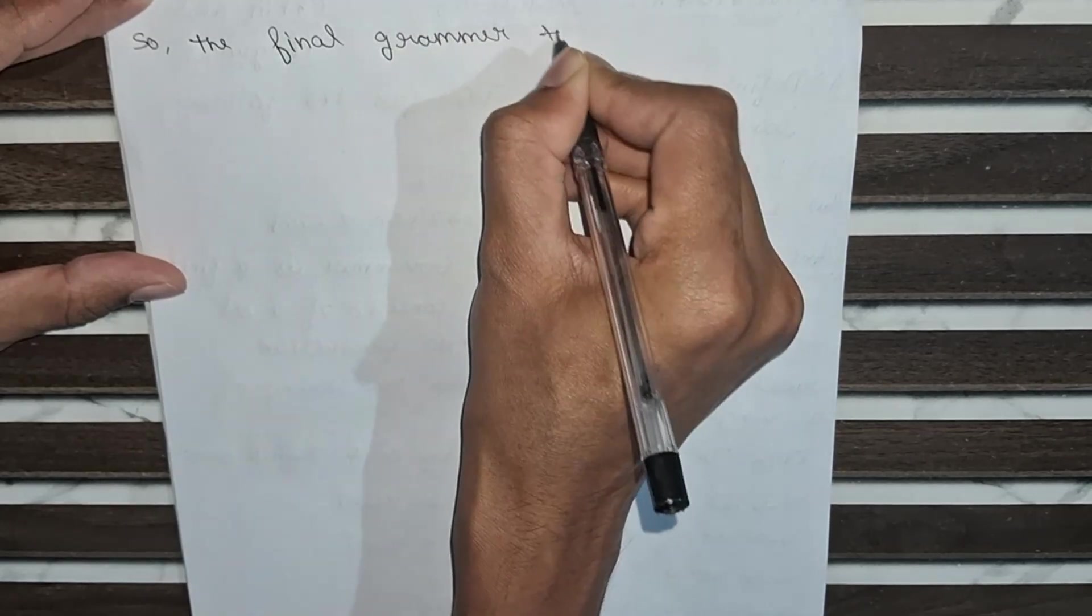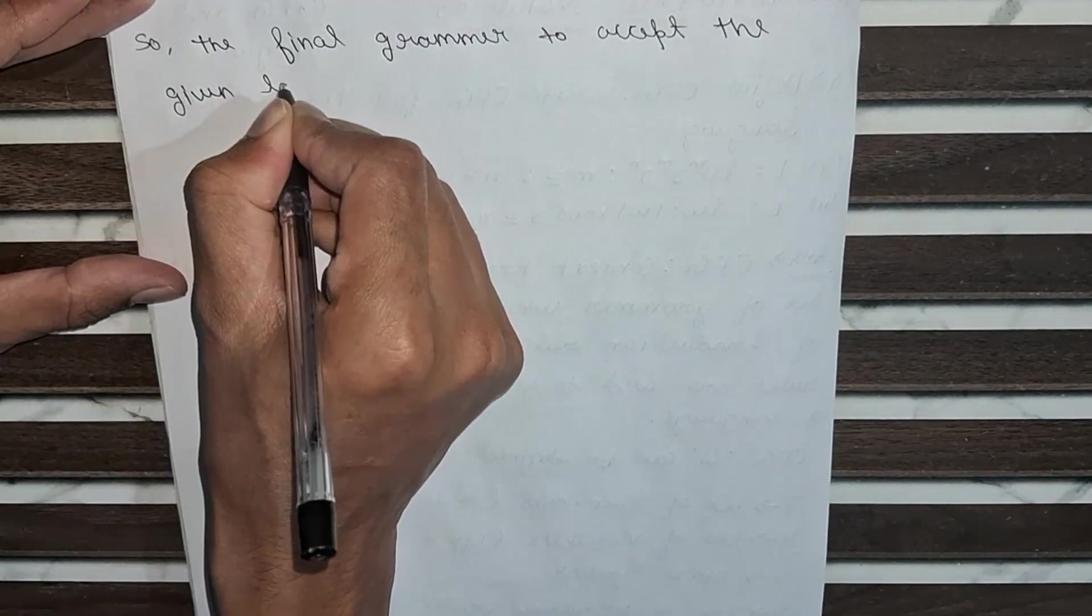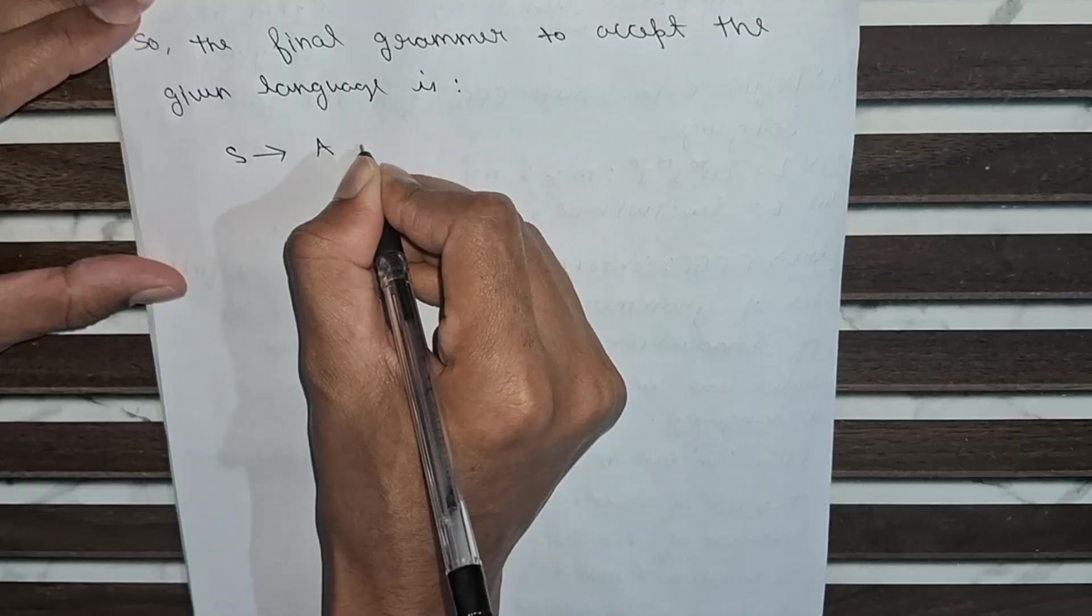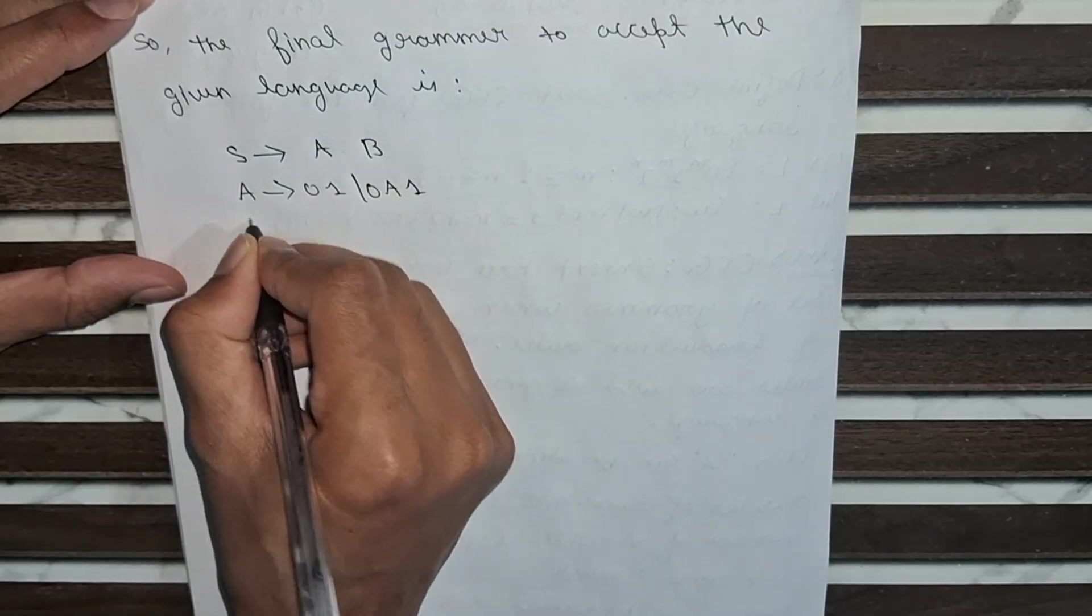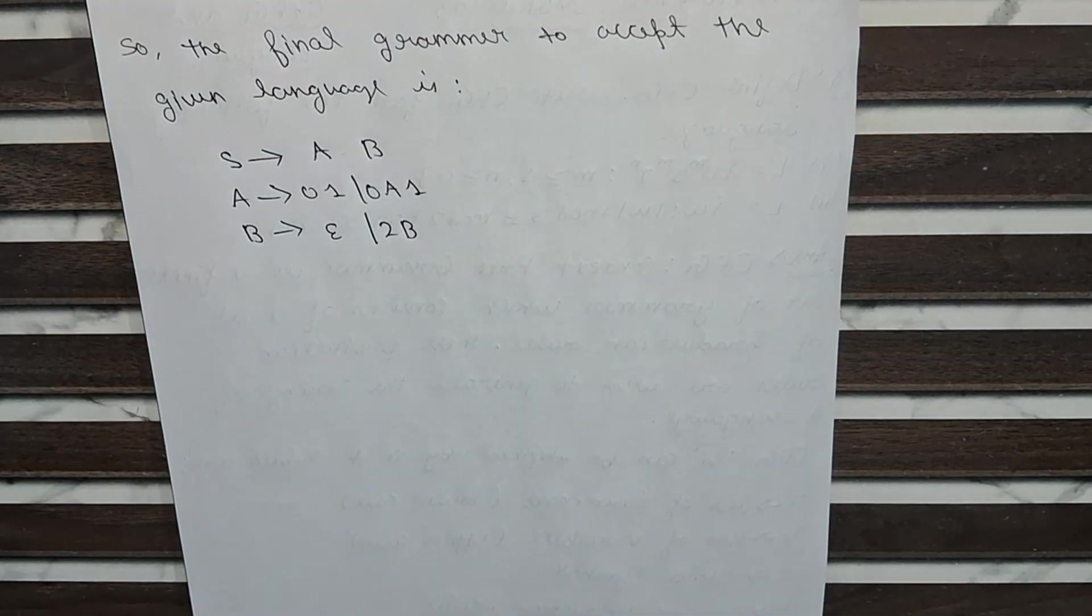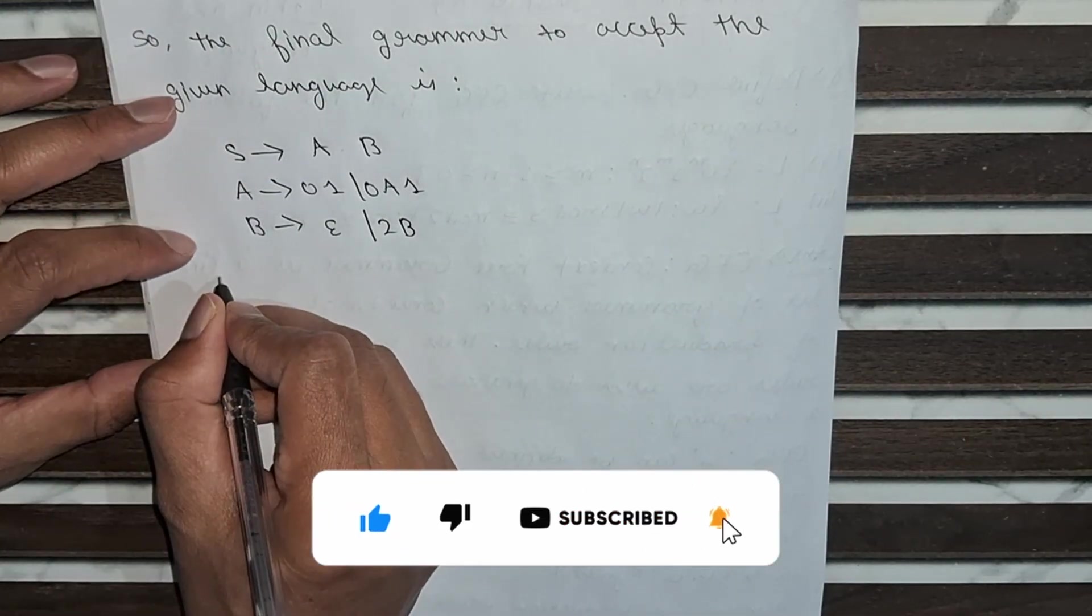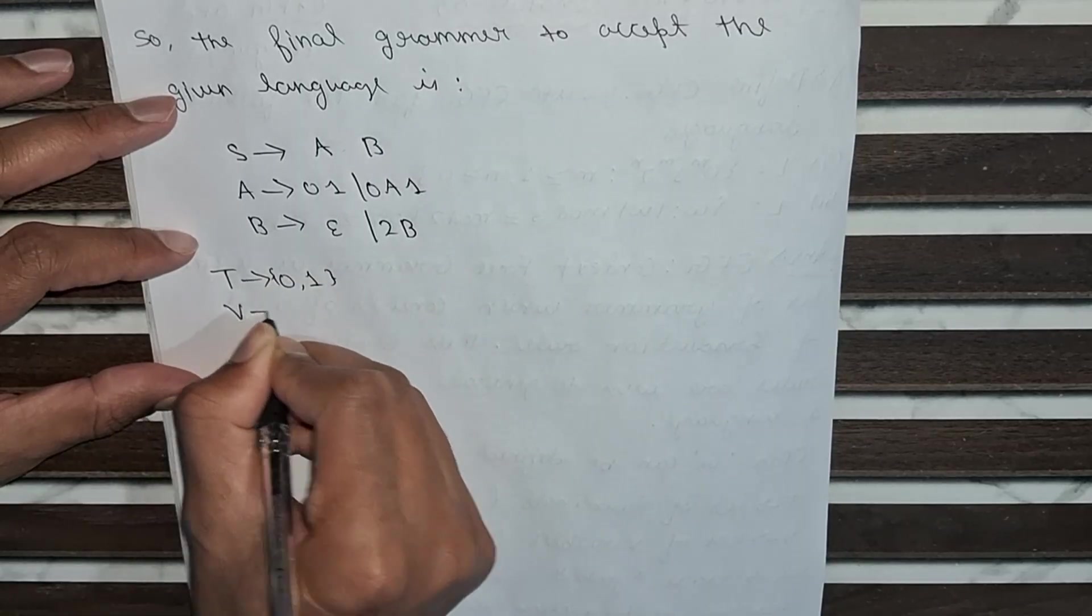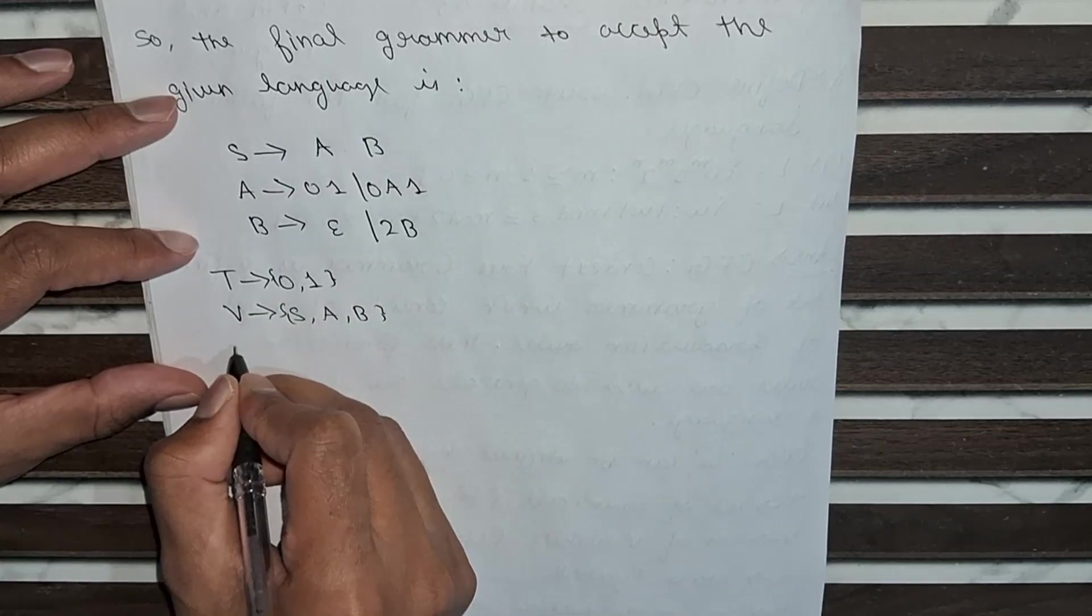So the final grammar to accept the given language is S goes to AB. And here we call A as 01 and 0A1, and B equals epsilon or 2B. So this is the grammar which will be accepted for that particular language. And here T is {0, 1, 2}, variables are S, A, B, and the starting symbol is S.